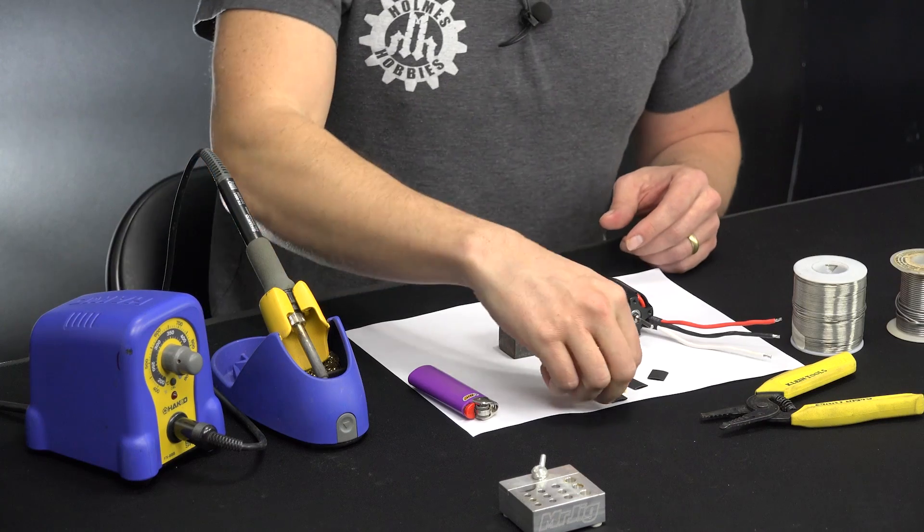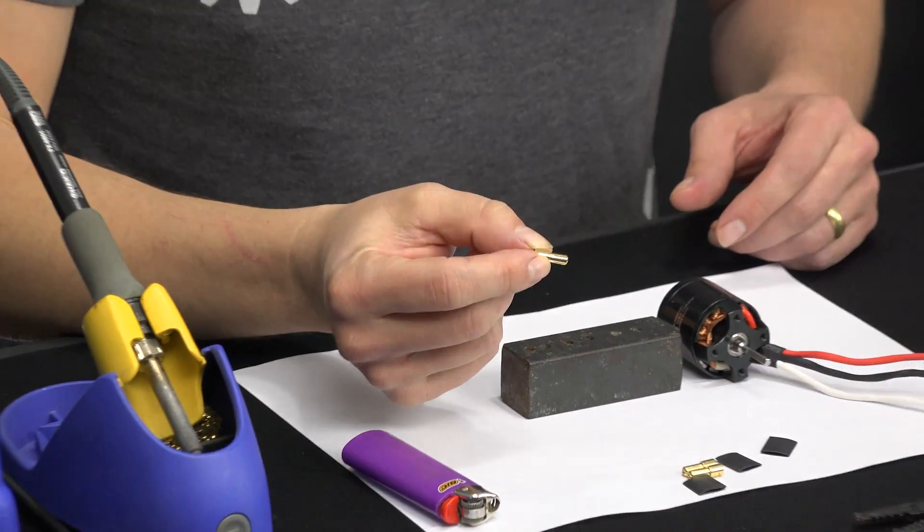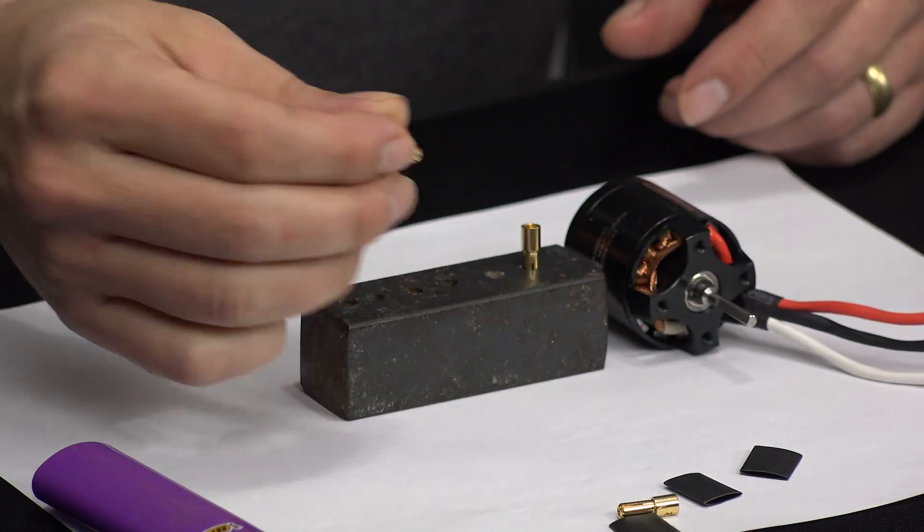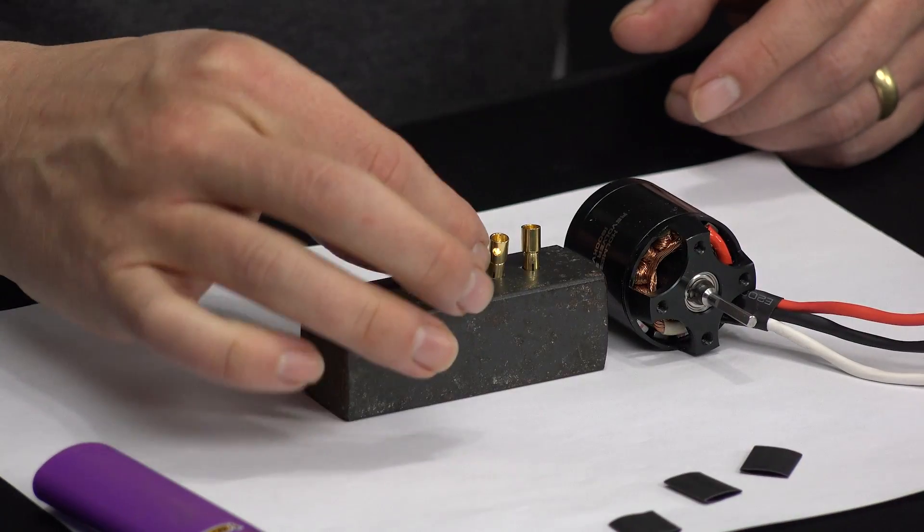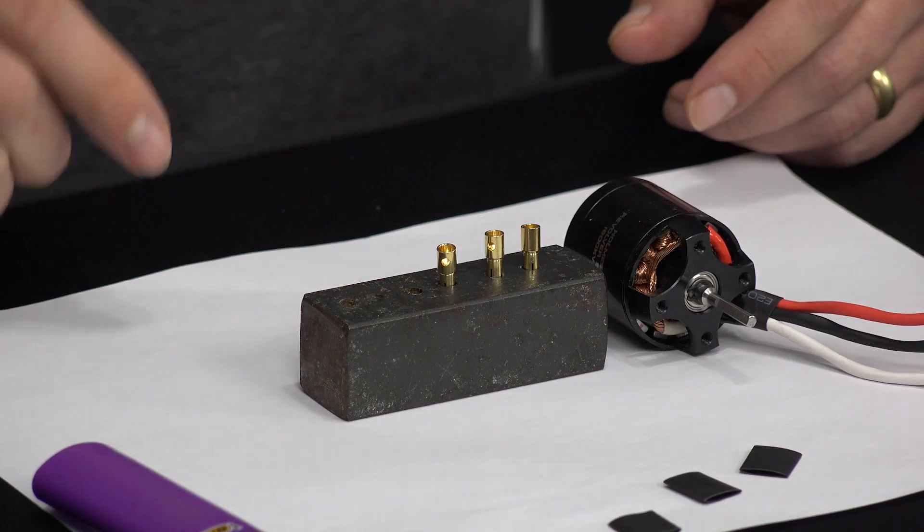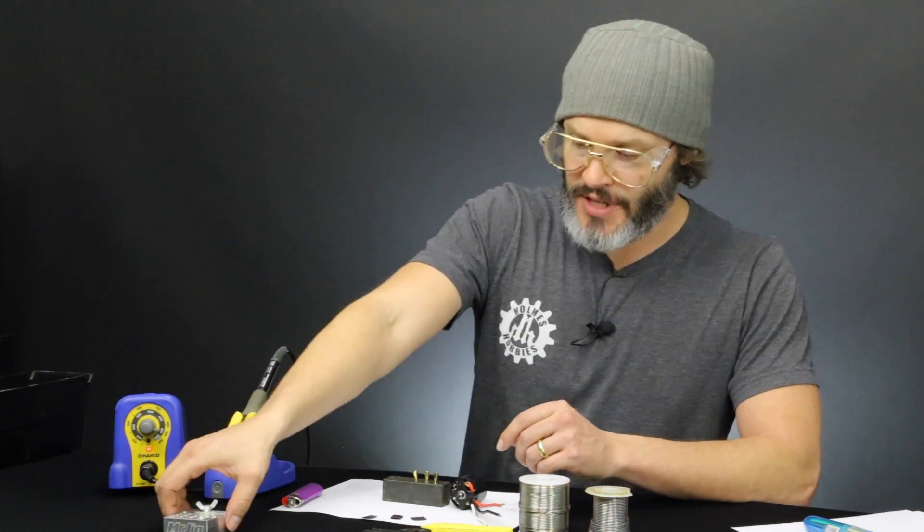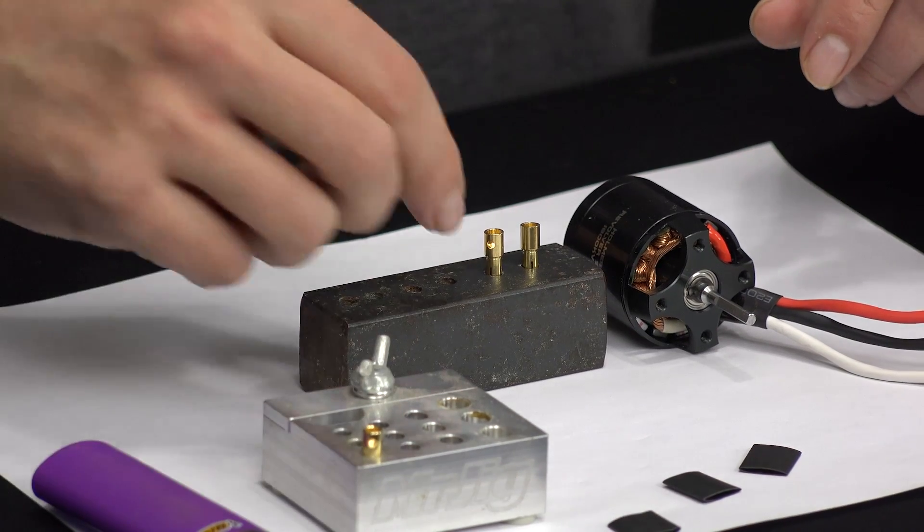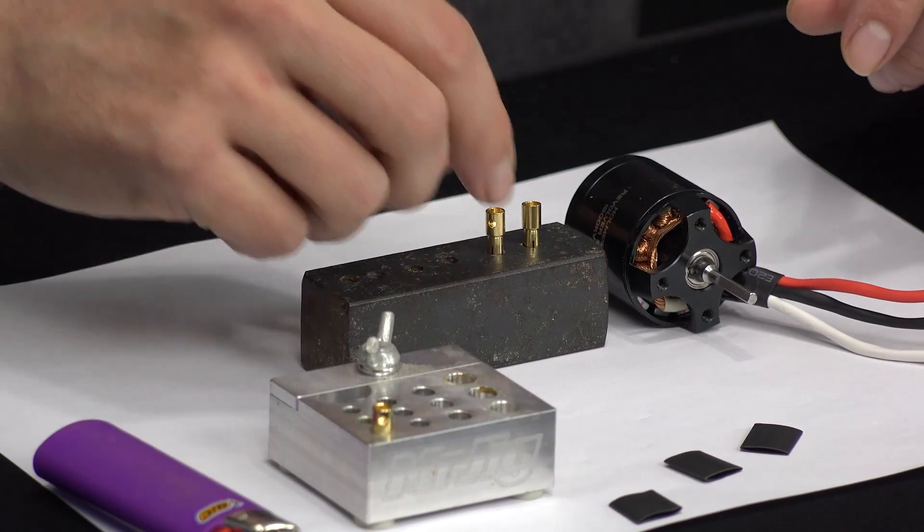So what I'm going to do first is put our four millimeter bullet plugs into this little jig that I have made. This is made out of steel, and we just used a quarter inch drill bit to drill into it. Now, I have this nice fancy looking jig here, and you might wonder, well, why aren't you going to use that? This is a Mr. Jig. I think I picked it up from Hobby King.